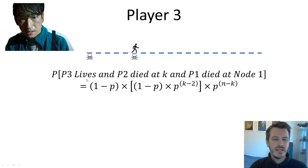The probability that player 3 lives in this scenario is shown here below. You've got here p to the n minus k. If we work our way from this side, this is the work that player 3 still has to do. But how did we get here? Well, player 1 died on node 1. There he is at 1 minus p. And then player 2 did k minus 2 correct guesses. That's four correct guesses followed by an incorrect guess on the node we're standing on.